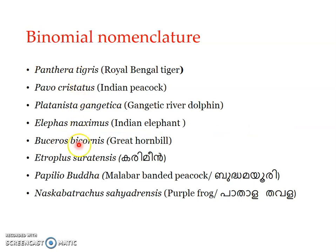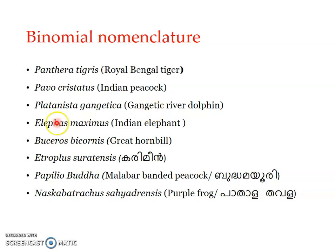A few examples of national and state organisms: Panthera tigris is the Bengal tiger; Pavo cristatus is the Indian peacock; Platanista gangetica is the national aquatic animal; and Elephas maximus is the Kerala state animal.